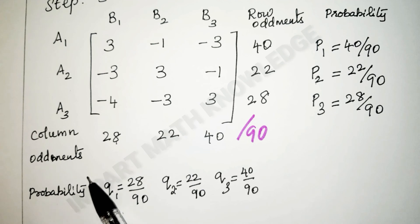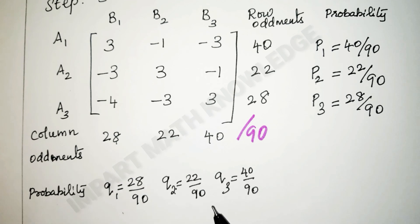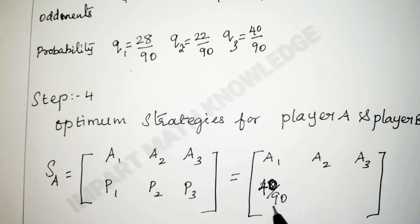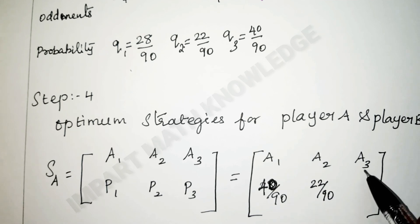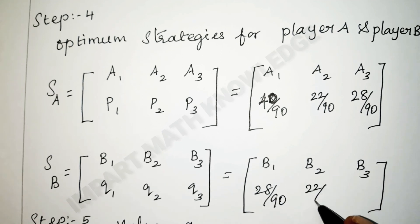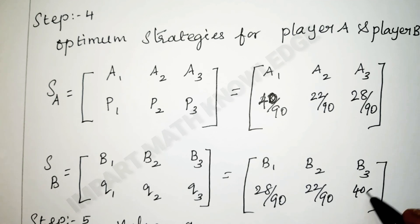From the row oddments and column oddments, we find the probabilities of strategies for player A and player B. Step 4: the optimum strategies for player A are 40/90, 22/90, and 28/90, and for player B are 28/90, 22/90, and 40/90.